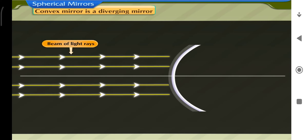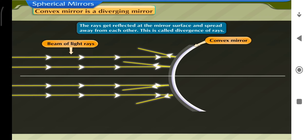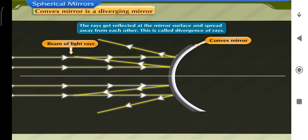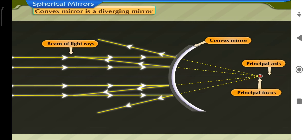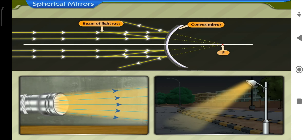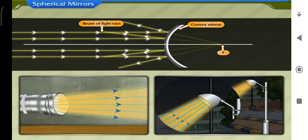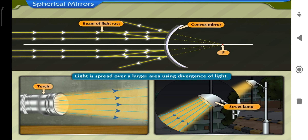A convex mirror is a diverging mirror. When a beam of light falls on a convex mirror, the rays get reflected and spread away from each other — this is called divergence. When the rays are extended backwards, they appear to come from a point on the principal axis called the principal focus F of the convex mirror. When we want to spread light from a source over a larger area, a diverging beam is used, for example in torches and street lamps.